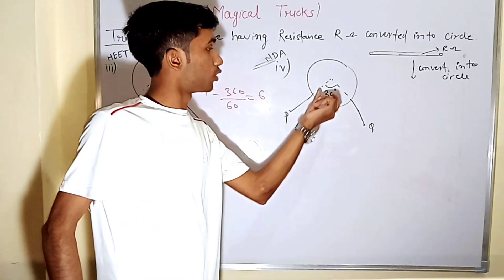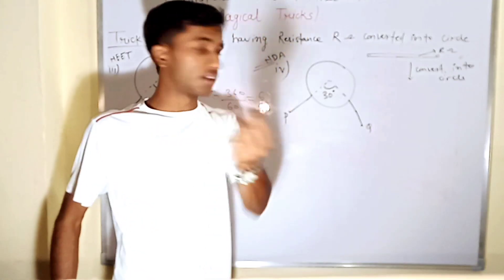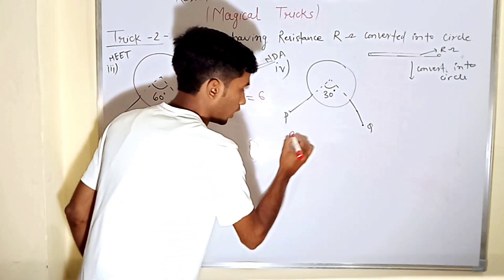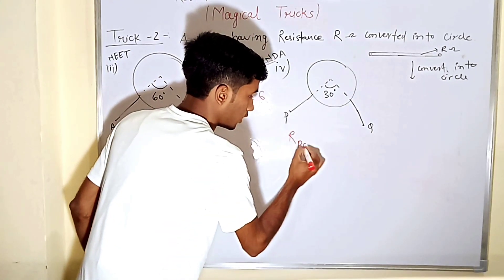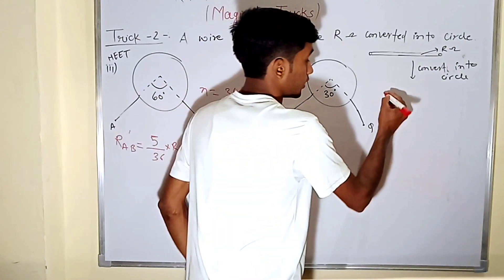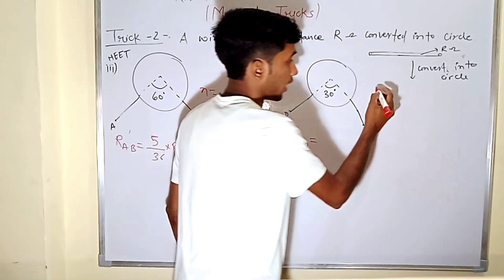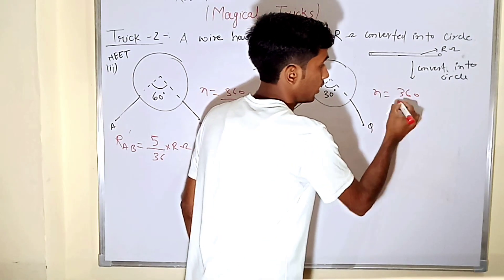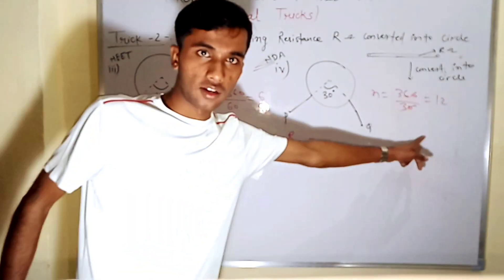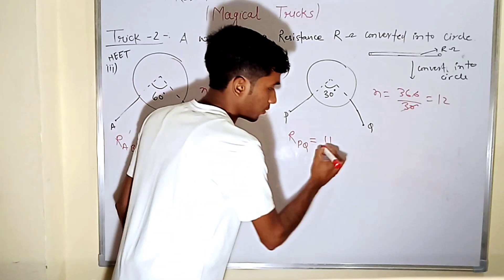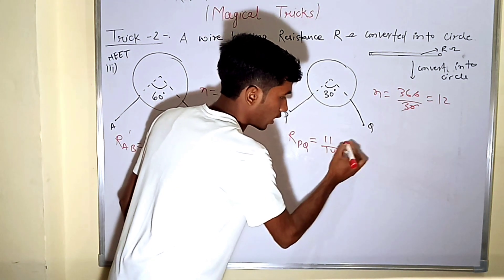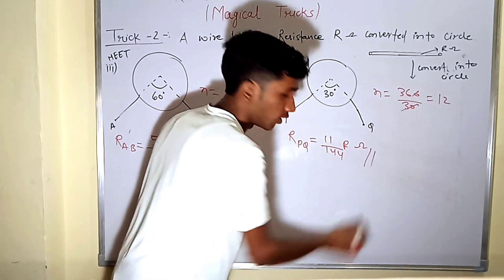The other way: the angle is 30 degrees. So R is P-Q. Theta equals n — so n equals 360 divided by 30, which equals 12. So the answer is 11 upon 144 R.